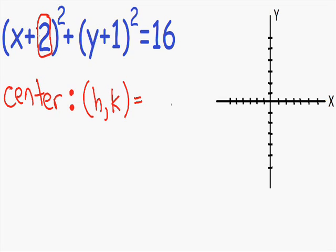Since the number next to the x-term is 2, the h, or x-coordinate of the center, is also going to be 2 — except it's going to be opposite in sign. So since it's a positive 2, it's going to be negative 2.